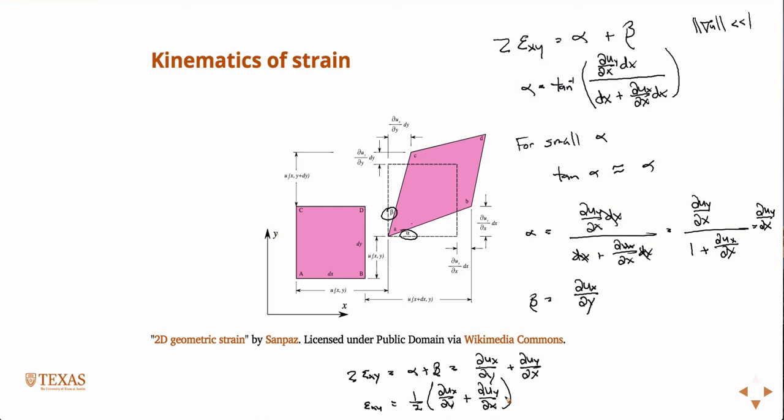So epsilon xy is 1 over 2 times partial u_x partial y plus partial u_y partial x. So the x component, this is the x component, take the derivative with respect to y. This is the y component, take the derivative with respect to x.